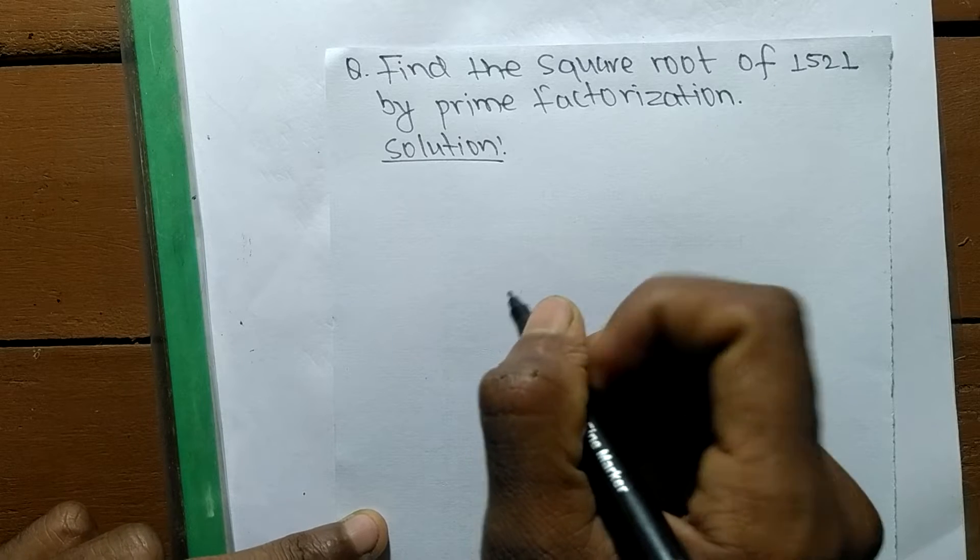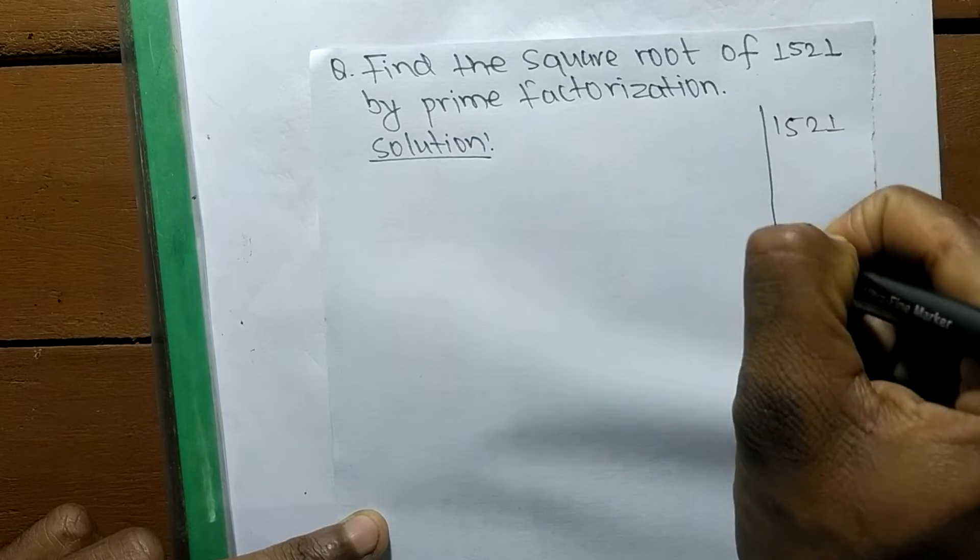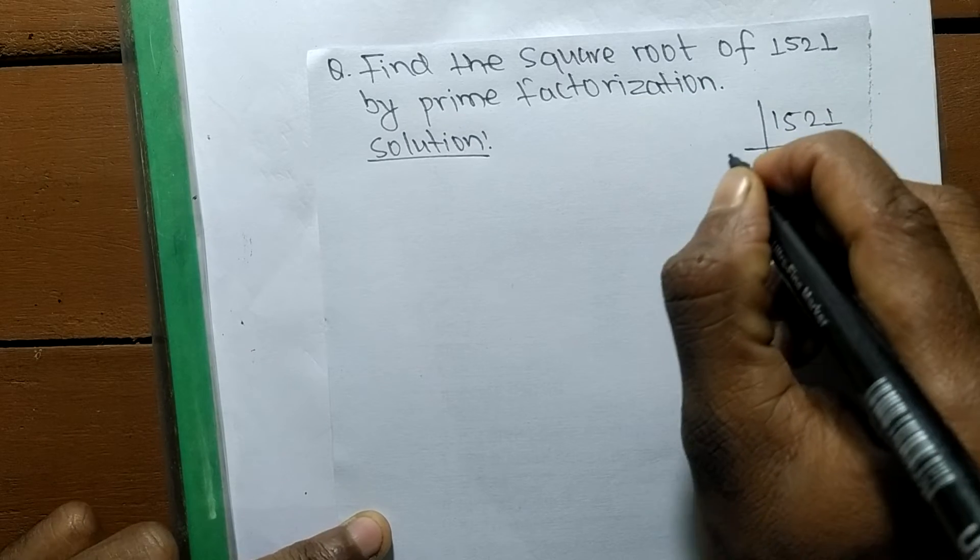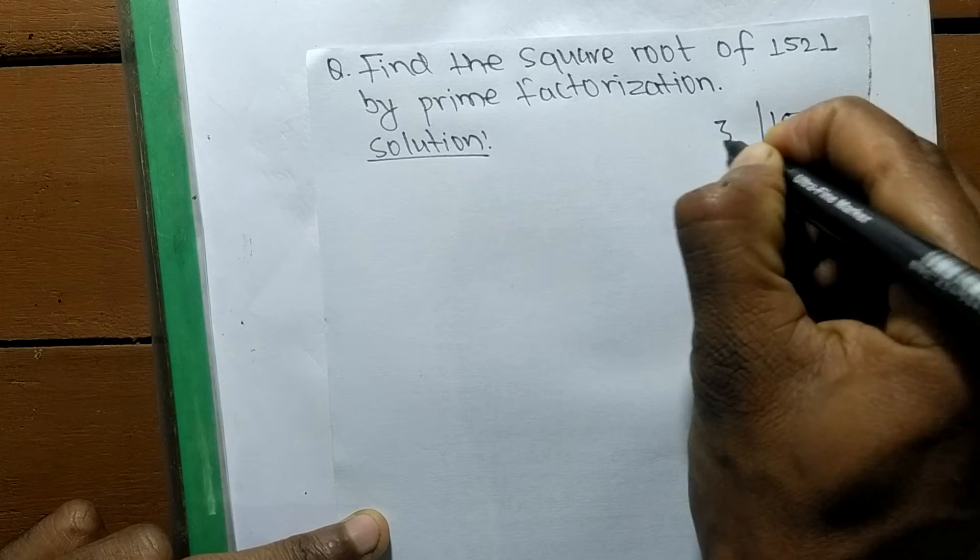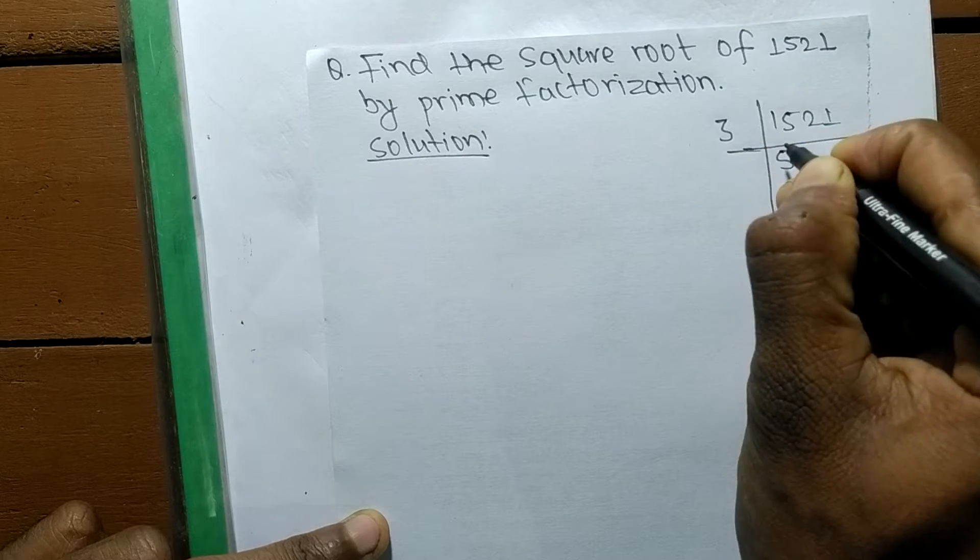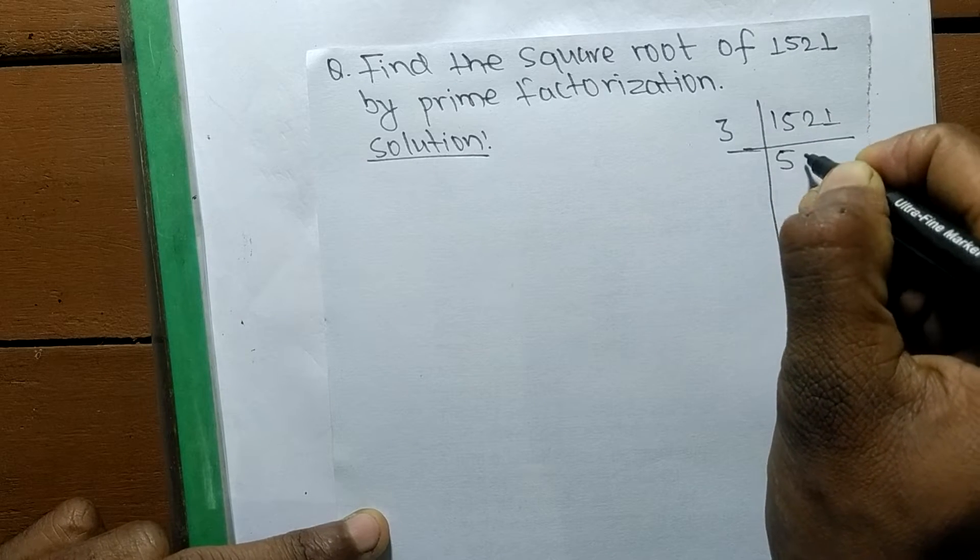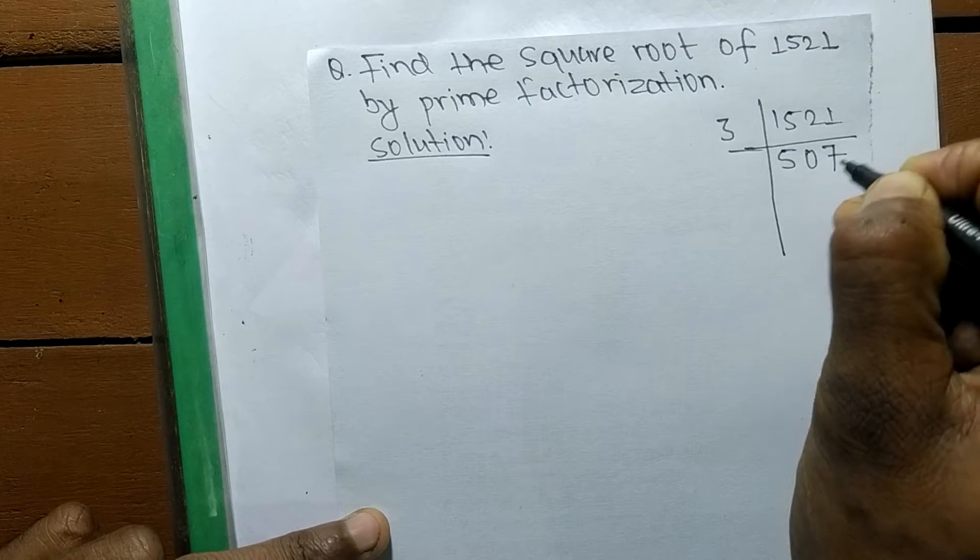So we have given number here is 1521. The prime factors of 1521 are... it is 3, so 3 times 5 means 15, like as 2, so 0, 3 times 7 means it is 21.